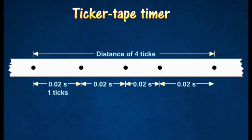The constant time interval between two successive dots on the ticker tape is called one tick. One tick is equal to one over 50, or 0.02 second.